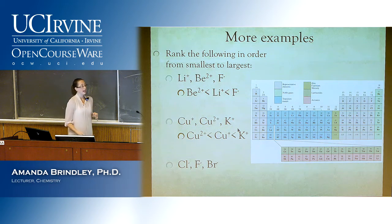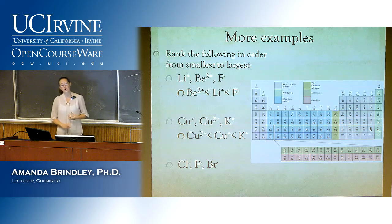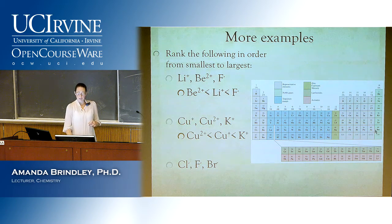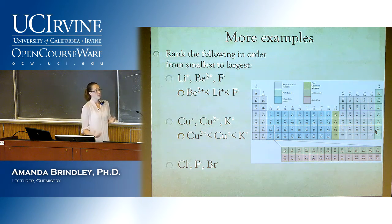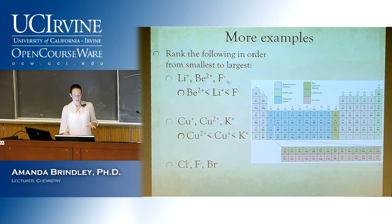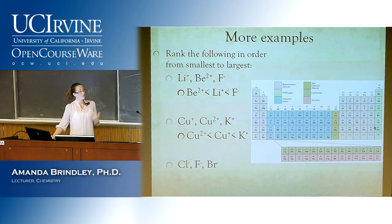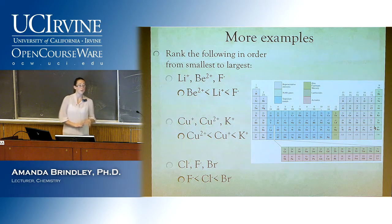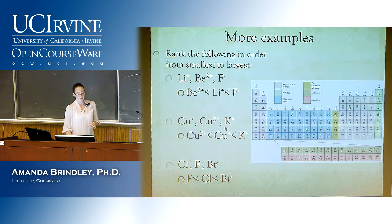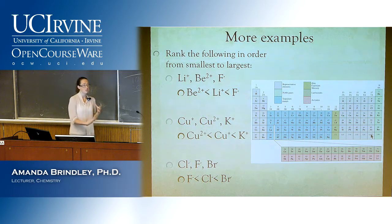Now for all halogen ions — they're all minus one, so there's nothing to look at as far as charges go. The only thing we need to look at is our trend as we go down the periodic table. As we go down, we're adding shells of electrons, and each time we add a shell, it gets larger. So our smallest is up top and our largest is down below, making fluorine the smallest and bromine the largest.